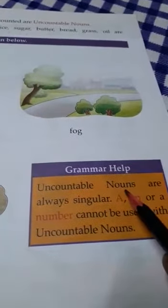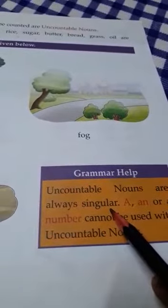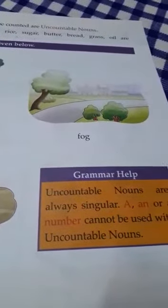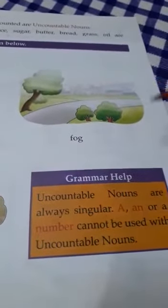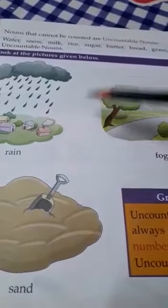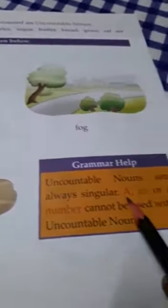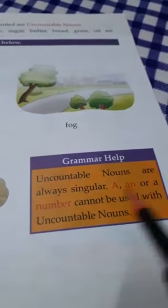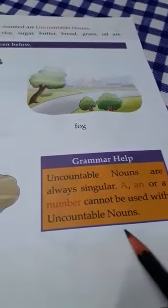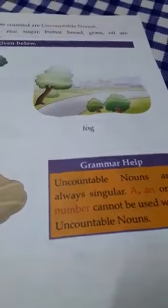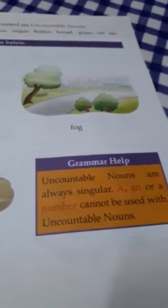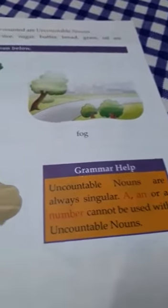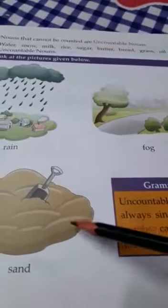Uncountable nouns are always singular, meaning they don't have any plural form. A, An, or a number cannot be used with uncountable nouns. We cannot use A, An, or any number before uncountable nouns.